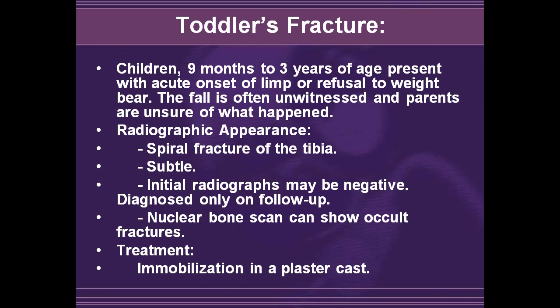Children 9 months to 3 years old may present with acute onset of limp or refusal to weight bear. Often they have had a toddler's fracture — a fall which is most often unwitnessed and parents are unsure of what happened. It is a spiral fracture of the tibia and is often subtle. Initial radiographs may be negative and may sometimes only be diagnosed on follow-up imaging or nuclear medicine bone scan. This is treated with immobilization in a plaster cast.